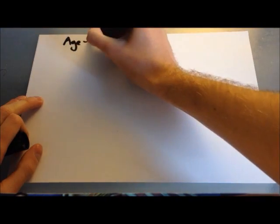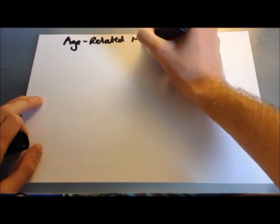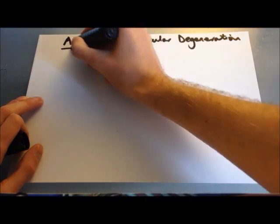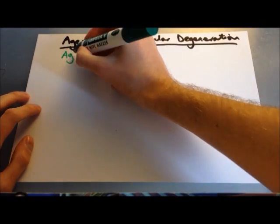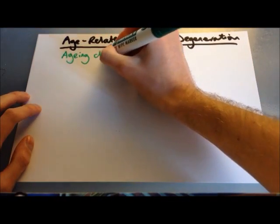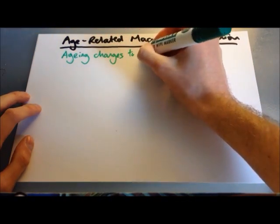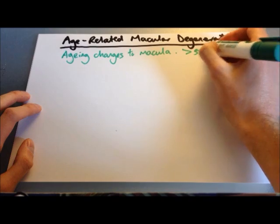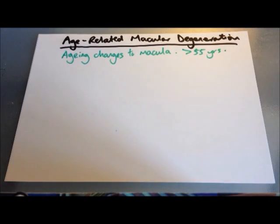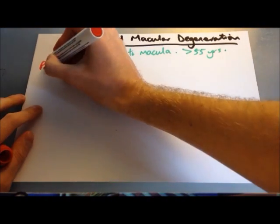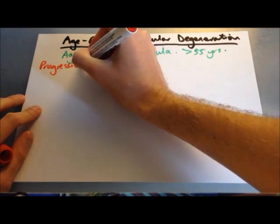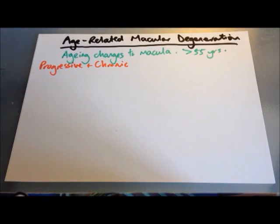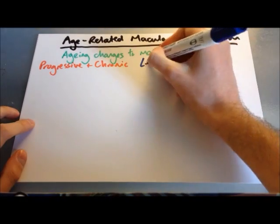We're starting with age-related macular degeneration, then cataract, diabetic retinopathy, chronic open-angle glaucoma, and retinitis pigmentosa. Age-related macular degeneration is a condition where there are aging changes to the macula in the eye without any obvious precipitating cause. It happens in people over the age of 55 years. It's a progressive and chronic condition and is one of the leading causes of blindness worldwide; in the west it's the most common cause of blindness.